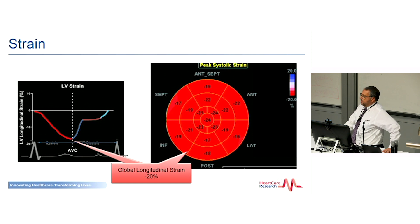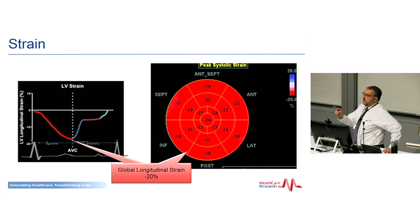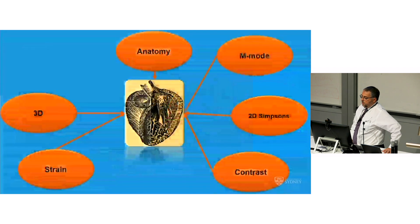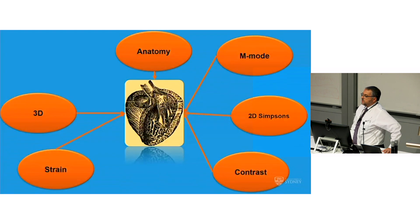Looking at the bullseye map — all those numbers are percentages — the anteroseptum contracts by 19%, another segment by 22%, another by 19%. This is regional contractility, and when you average the whole thing it should be about 20–22%. That is called GLS: Global Longitudinal Strain. This is already a standard for measuring heart function, not by volume but by muscle wall shortening — and it is particularly pertinent for chemotherapy patients, where dosing is now set based on these GLS numbers.